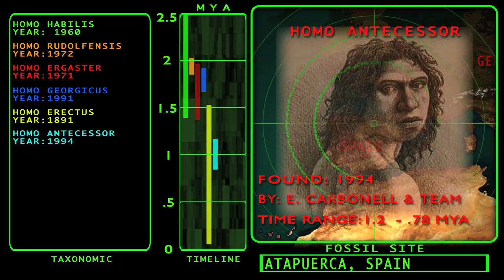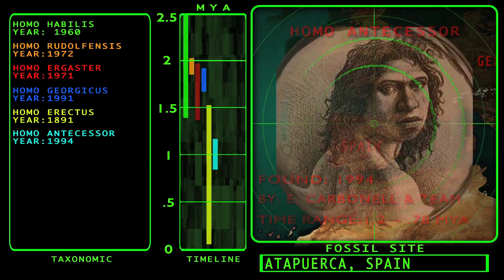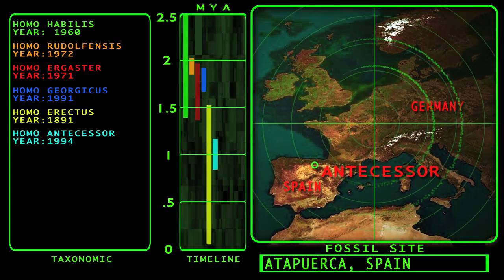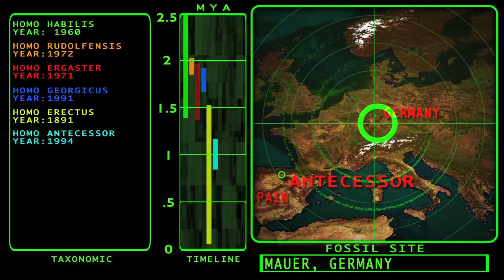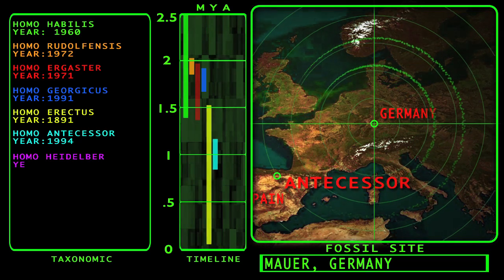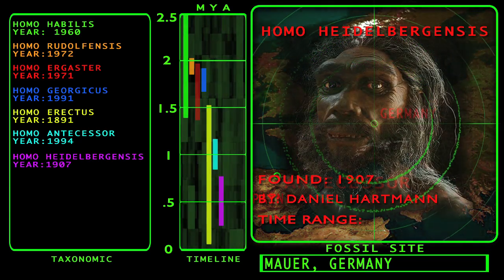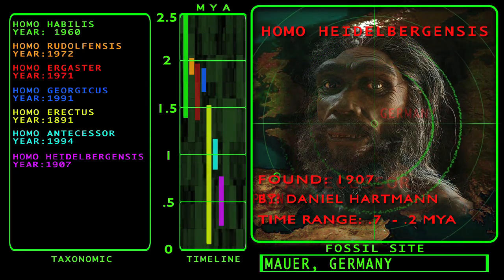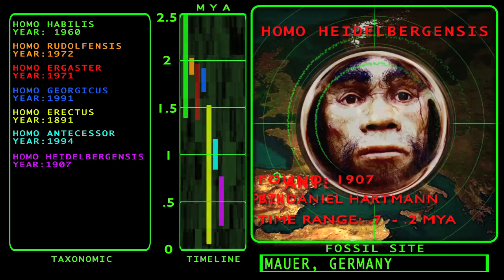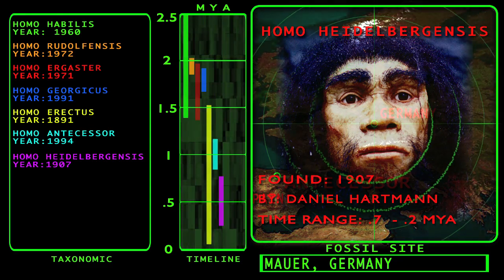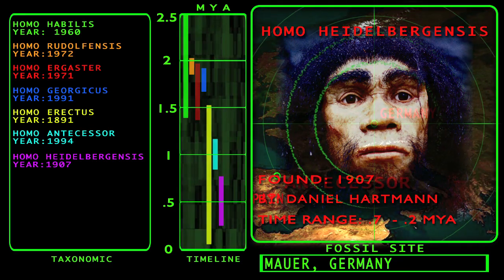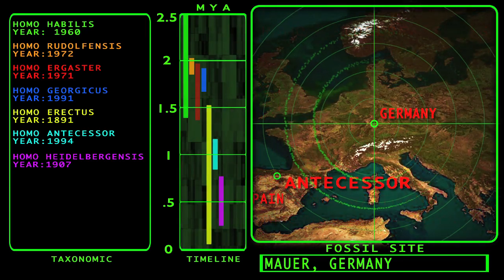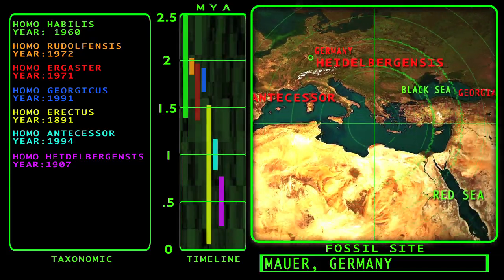Some paleoanthropologists believe that Homo antecessor should actually be classified with the next hominin on our timeline, Homo heidelbergensis. The first fossil of Homo heidelbergensis was discovered in 1907 in Mauer, Germany by Daniel Hartmann, a workman at a local sandpit. Hartmann gave the fossil jaw to Otto Schoetensack, a professor at the University of Heidelberg, who assigned the fossil to the species Homo heidelbergensis. The time range of heidelbergensis is about 700,000 years ago to as late as 200,000 years ago.